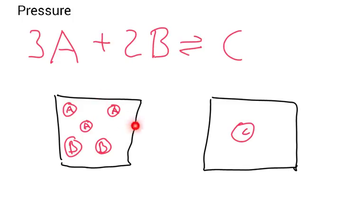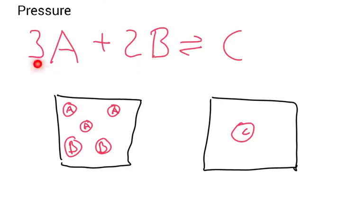Every time one of these molecules hits against the wall, it exerts a pressure. So if I increase the pressure on this box, the equilibrium position is going to move more towards C, because with just C there's only one molecule hitting the sides of the container as opposed to five. If I reduce the pressure, Le Châtelier's Principle says the system will oppose my change, so the equilibrium position would move towards the left — ending up with more molecules on that side.